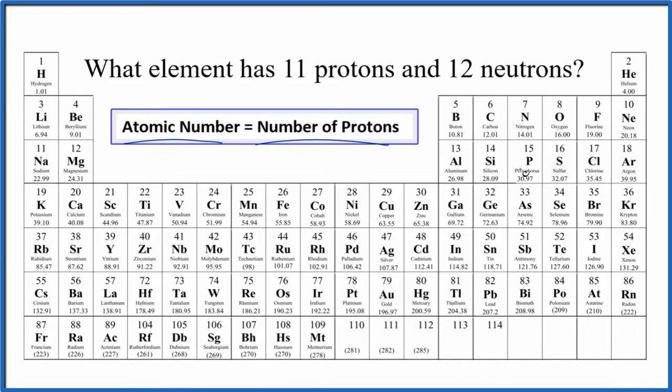So if we find the element on the periodic table with atomic number 11, we'll know we have 11 protons. So the atomic number, that's the whole number. It's right above the element symbol almost all the time. And as we go across the periodic table here, it increases by 1. We're adding 1 proton.